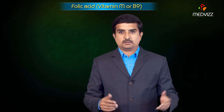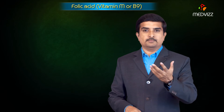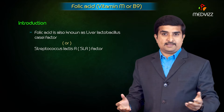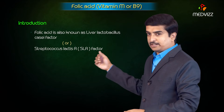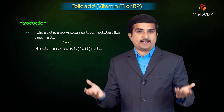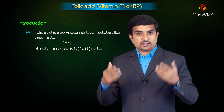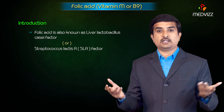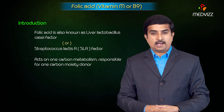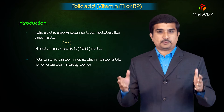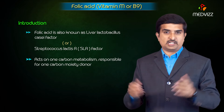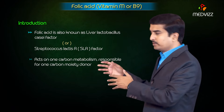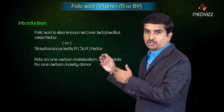Folic acid, also known as vitamin M or B9, is also known as the liver Lactobacillus casei factor or the Streptococcus lactis R factor (SLR factor). It acts especially on one carbon metabolism, where it is responsible for one carbon moiety donation.